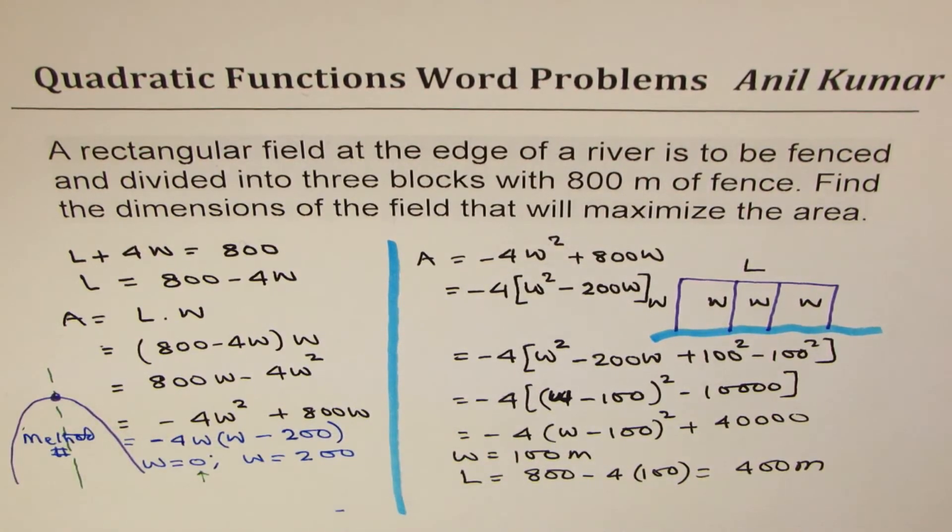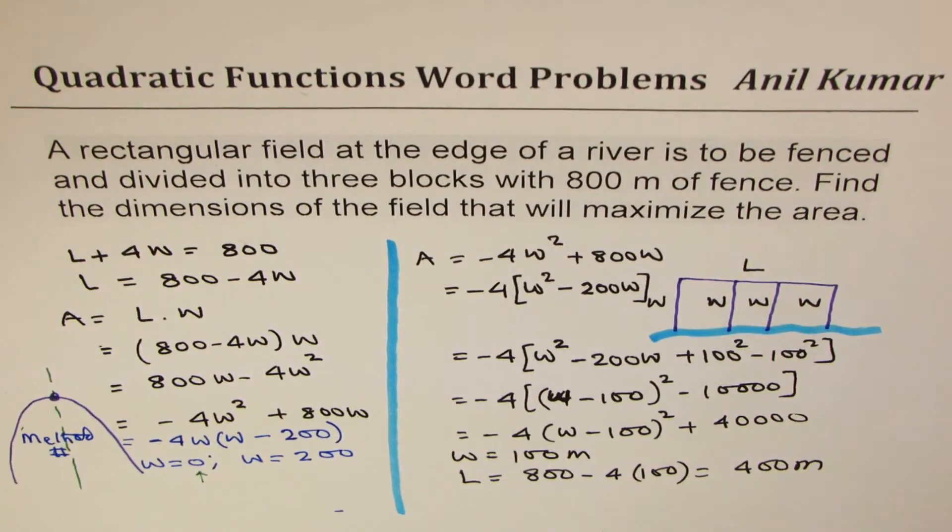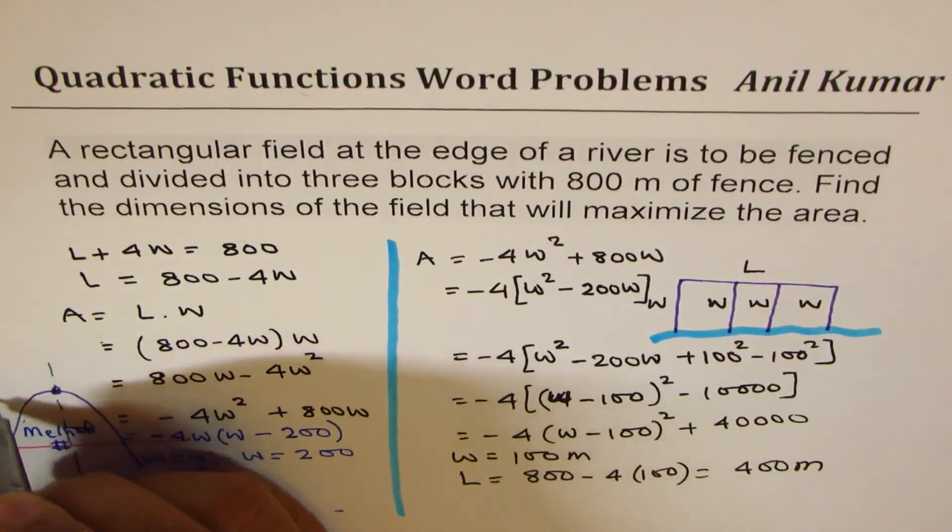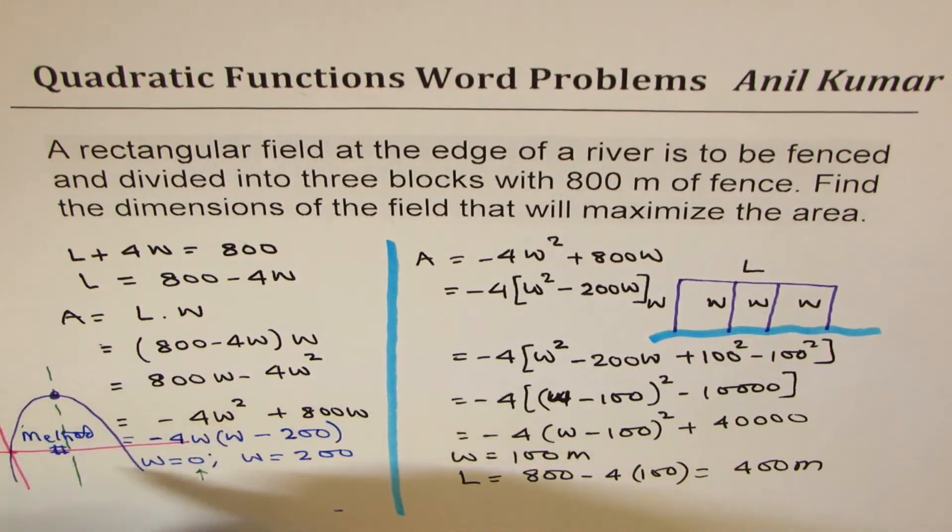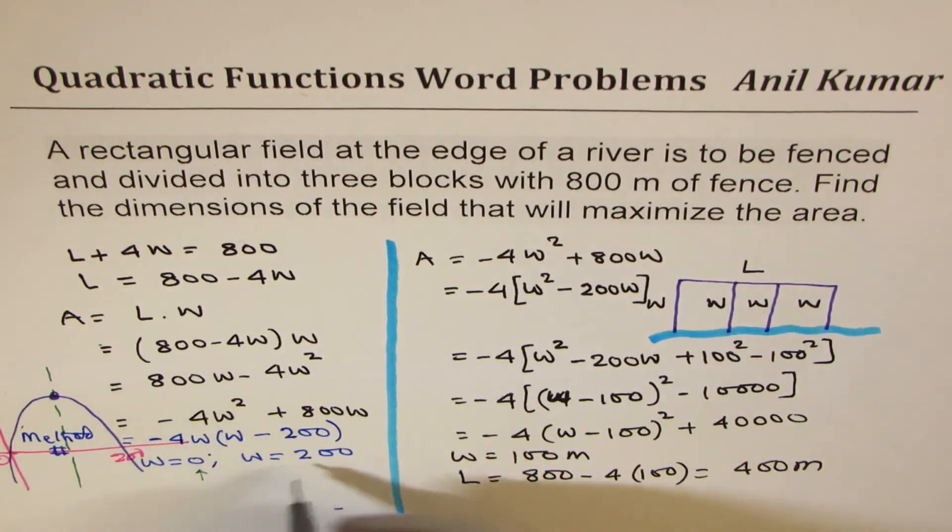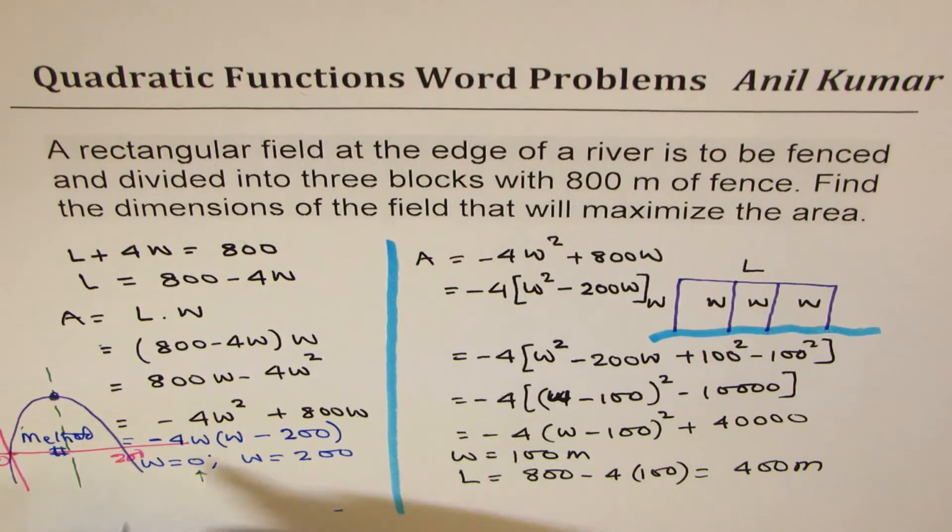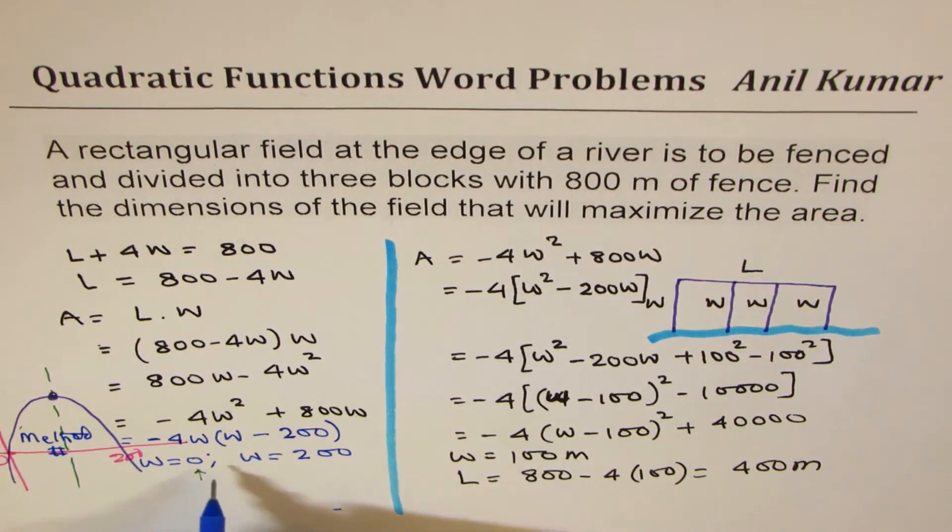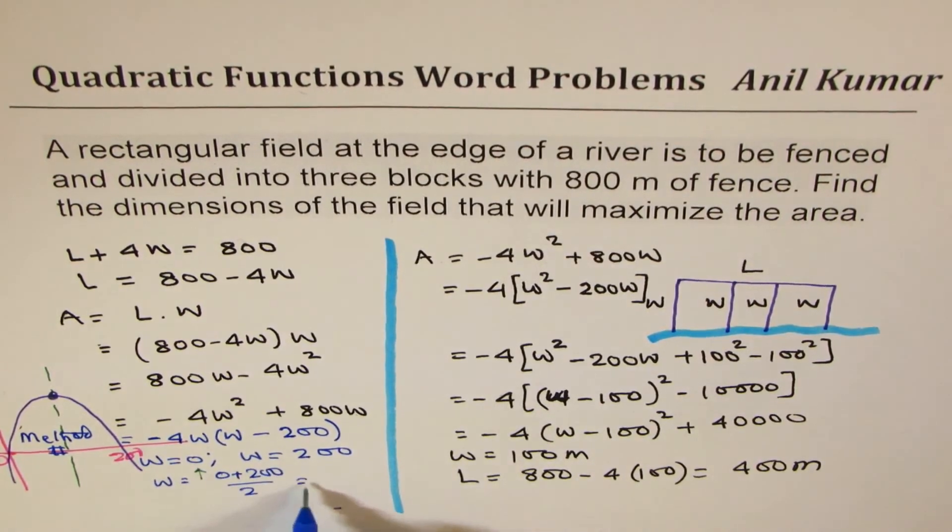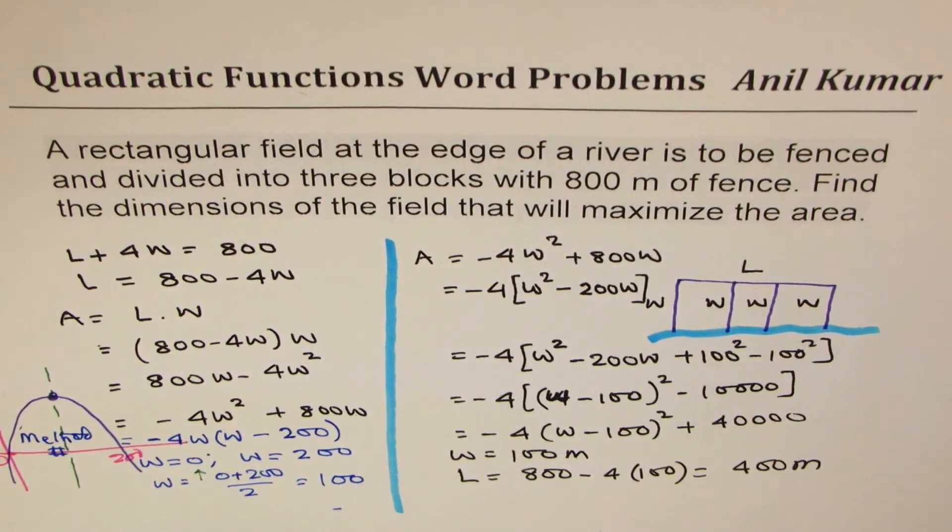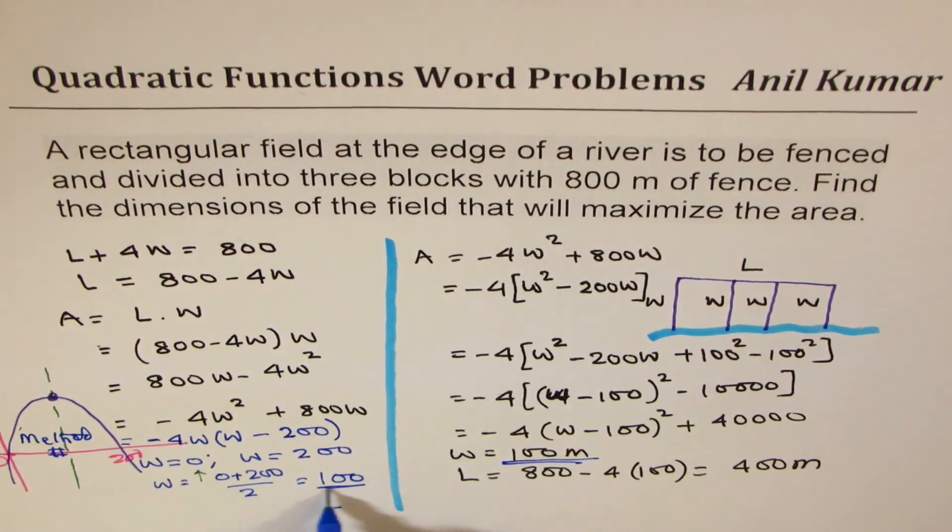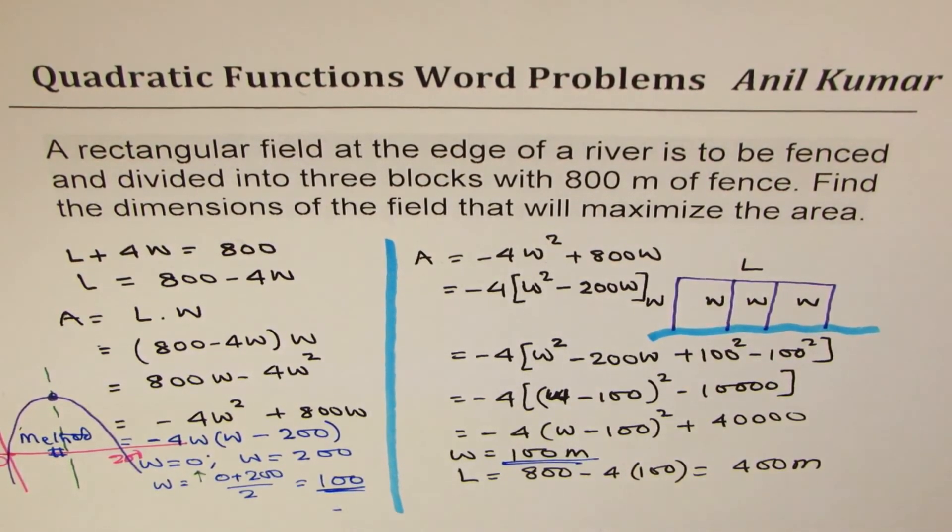So let me sketch the axis kind of like this. This is 200, that is zero, so it is at mid value. Do you see that? So we find that the axis will be at W equals (0 plus 200) divided by 2, which is at 100. So we get the same answer, W equals 100.